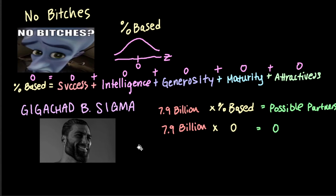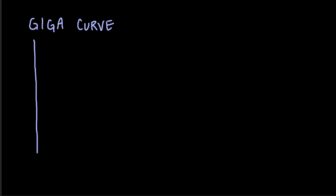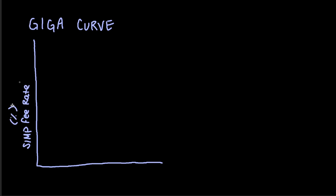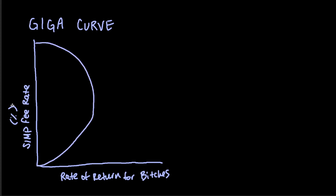Now another important concept is the concept of the Giga curve. Let me just draw a graph here. The Giga curve has the axes of SMP fee rate, measured in percent, on the vertical axis, and your rate of return for maidens on the horizontal axis. This curve can only exist as one shape, which is a semicircle.